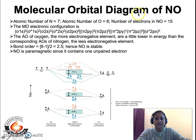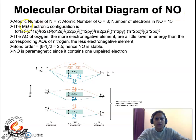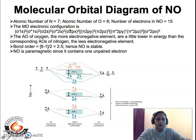The first heteronuclear diatomic molecule is NO. Nitrogen is one atom combining with oxygen to form a molecule of NO. The atomic number of nitrogen is 7, the atomic number of oxygen is 8, so the total number of electrons in an NO molecule is 15. Let us see the electronic configuration of NO as per the MO diagram.